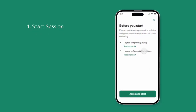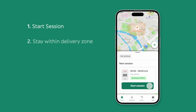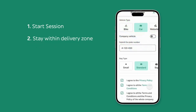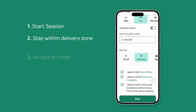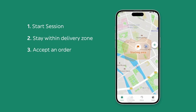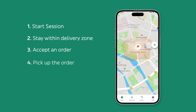Click on the I Am Available button to start your session. Specify which vehicle and bag type you use, and agree to the privacy policies. Once you make yourself available and are in the delivery zone, you can get orders faster in the red areas on the map.